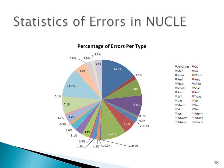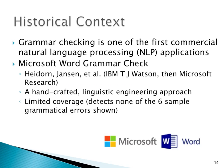This pie chart shows the distribution of errors within the NUCLE corpus. The six error types listed at the beginning of my talk comprise almost half of all error instances in the NUCLE corpus. Those are the ones we will concentrate on, because they are the majority of the errors.